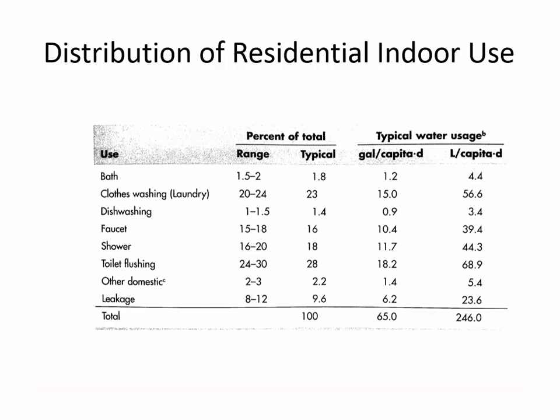The next slide shows the distribution for residential indoor water use. On average, the typical breakdown lists both percentage and amounts. Bath is 1.2 gallons per person per day at 1.8% — meaning people only take about one bath a week. Faucet use is 10.4 gallons per day — my estimate was 12.5. Shower: they say 11.7 gallons per day; my estimate was 25 — my showers are probably too long. Toilet flushing: I estimated 45 gallons a week, but they say the average is 18 per day. My overall estimate was 70 gallons per day indoors, and they say the typical is 65 — so I was close.